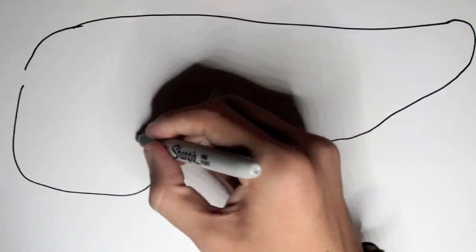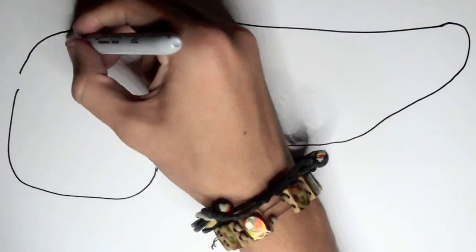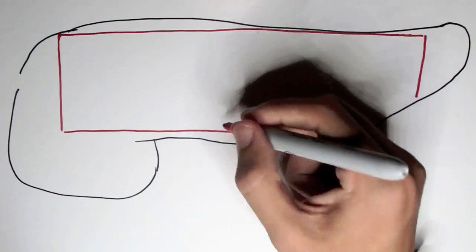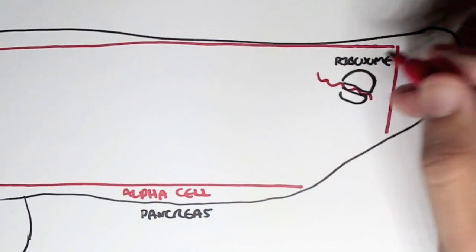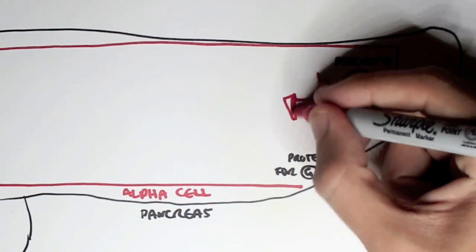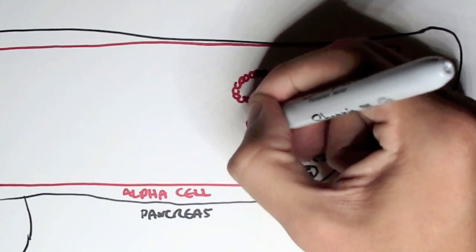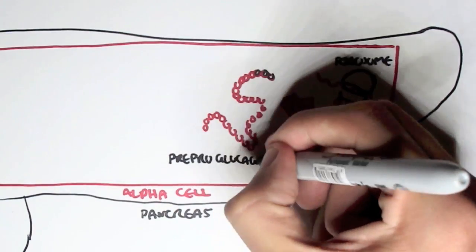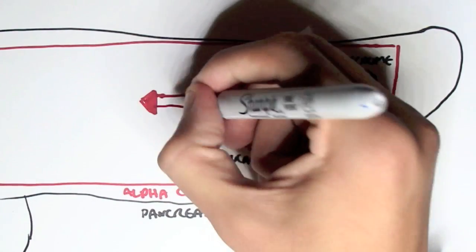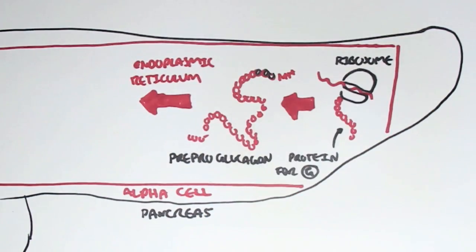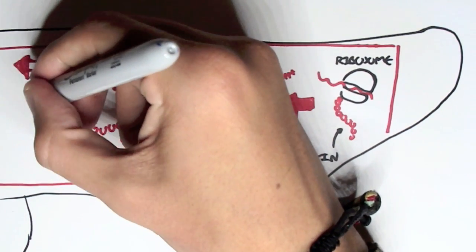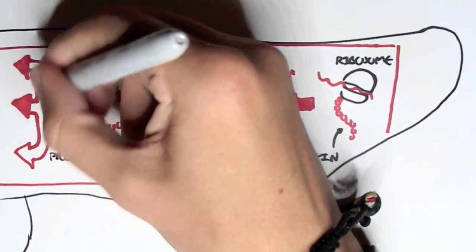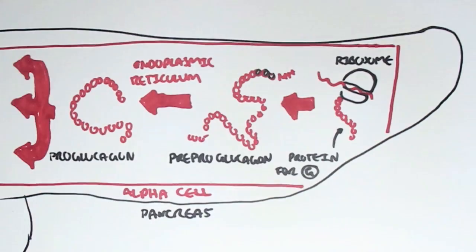Glucagon synthesis is very similar to insulin because they are both peptide hormones. Here we have the pancreas. Glucagon synthesis occurs in the alpha cells of the pancreas, because it's these alpha cells which essentially secrete glucagon. Within these alpha cells, we have ribosomes translating mRNA for glucagon. This polypeptide is pre-proglucagon, which has just been translated, and will then travel to the endoplasmic reticulum to get cleaved and sorted out to make proglucagon. The proglucagon is then cleaved into three different peptides by a particular enzyme.